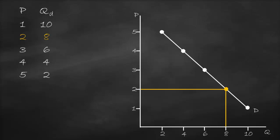I will label this point on the demand curve as point A. Now, what will happen if the price increases from 2 to 3? At a price of 3, the quantity demanded is 6. From the graph, at a price of 3, I go horizontally until I intersect with the demand curve, then I go down to get a quantity demanded of 6.